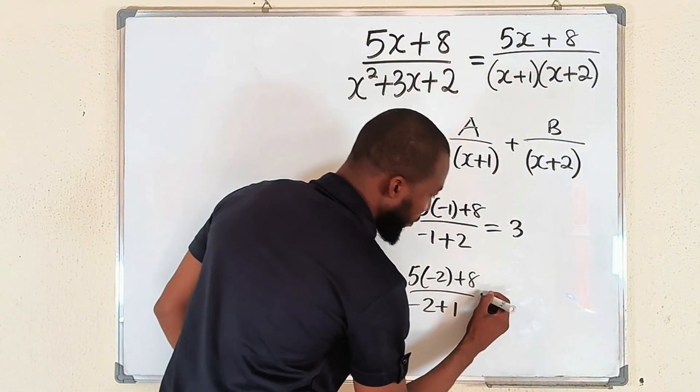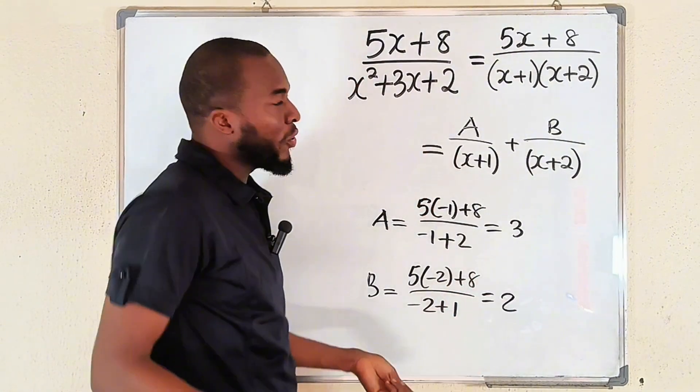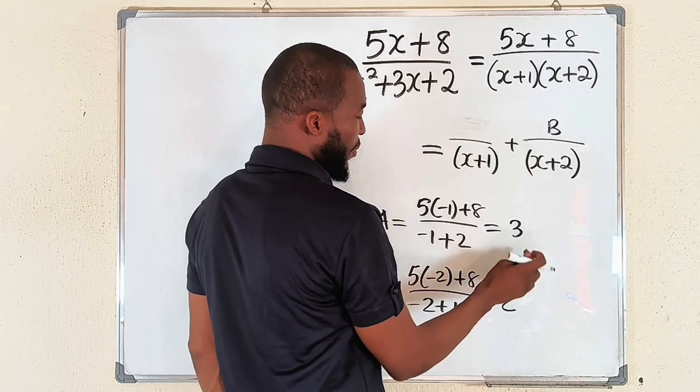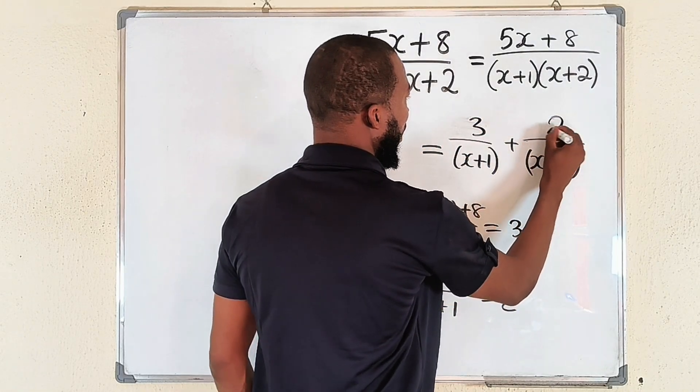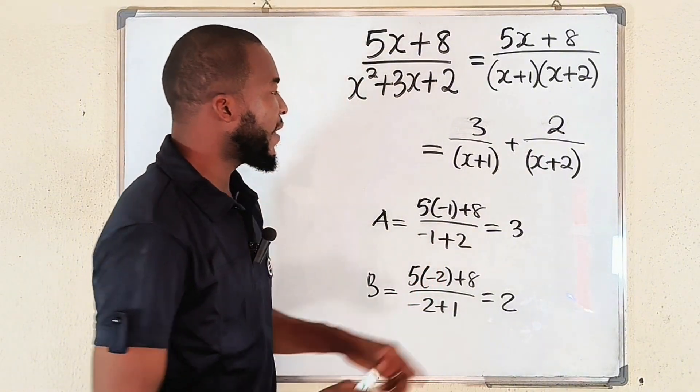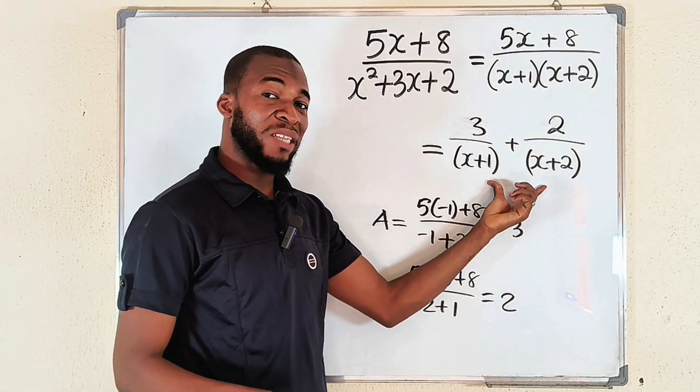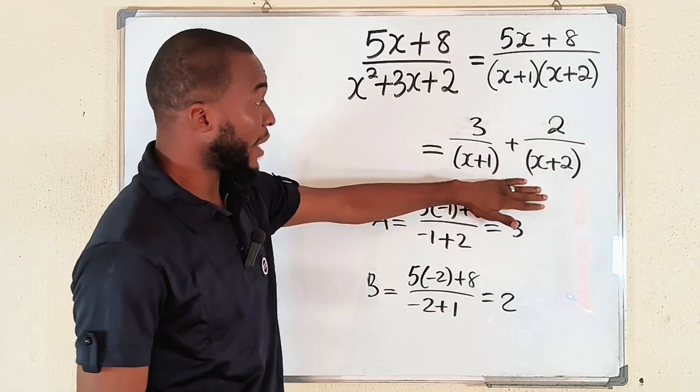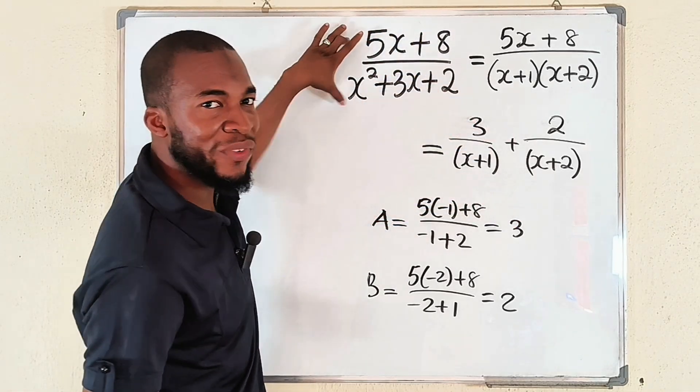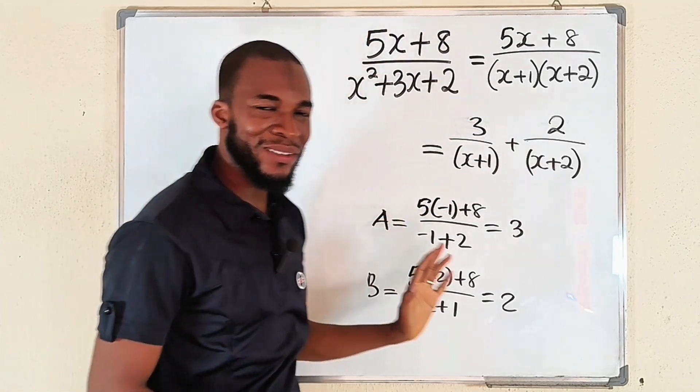And we are done. Just come here, replace A and B with these numbers: 3 and 2. So it implies that these partial fractions, you can see them, are the partial fractions of this compound fraction. As simple as that.